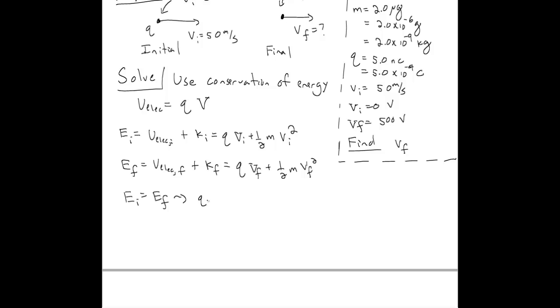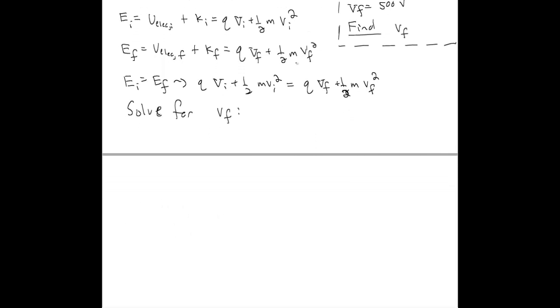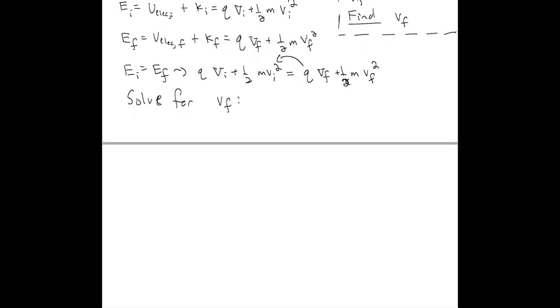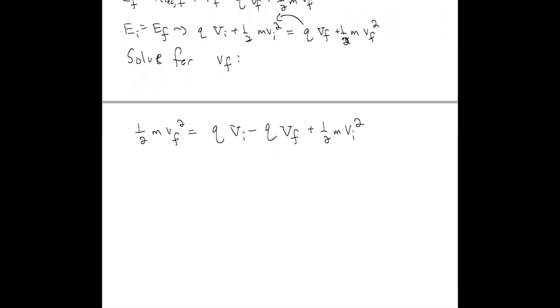We set these equal to each other and solve for what we want to know. In this case, we want to solve for the final speed Vf. We move some things to one side and some to the other. Let's move the final potential over there. Now let's plug in some numbers to see what this looks like.